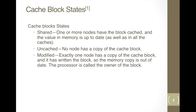Here are the different cache block states maintained by the directory. First is shared, where one or more nodes have the block cached and the value in memory is up to date. Second is uncached, where no node has a copy of the cache block. Third is the modified state, where exactly one node has the copy of the cache block, has written to it, and the memory is out of sync.